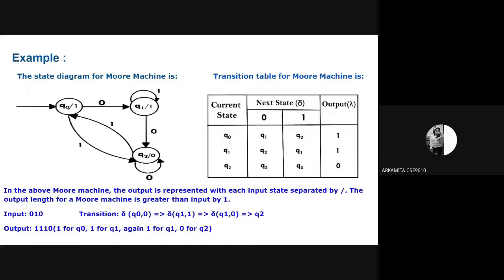We now look at an example of a Moore machine. As we said, in a Moore machine the output is associated with the states, so all the outputs are written inside the circles representing the states. For example, the output is written beside Q0, which is the state. This is the Moore machine diagram along with the transition table for the Moore machine.